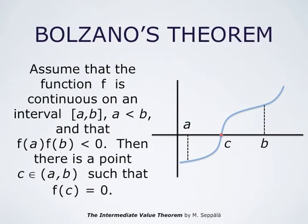Bolzano's theorem states that if the function f is continuous on a closed interval from a to b, with a less than b, and if f(a) times f(b) is negative, then there is a point C between a and b such that f(C) = 0. The condition f(a) times f(b) negative means that the signs of the values of f at the endpoints of the interval are different — so either f(a) is negative and f(b) is positive, or the other way around.